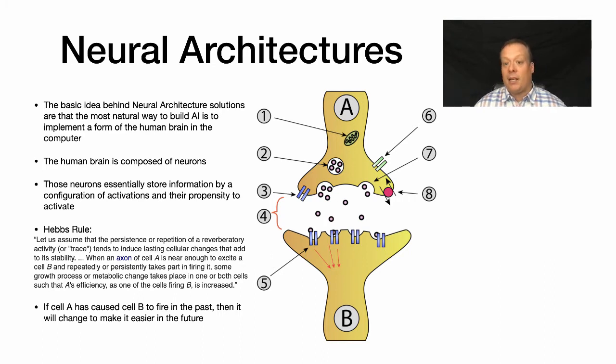There's a famous rule called Hebb's rule that basically said that if cell A causes cell B to fire in the past, then they will wire so that it makes it easier to do in the future. This happens through an electrochemical process between the neurons. A simple way of saying this is: things that fire together, wire together. They become more tuned to each other.